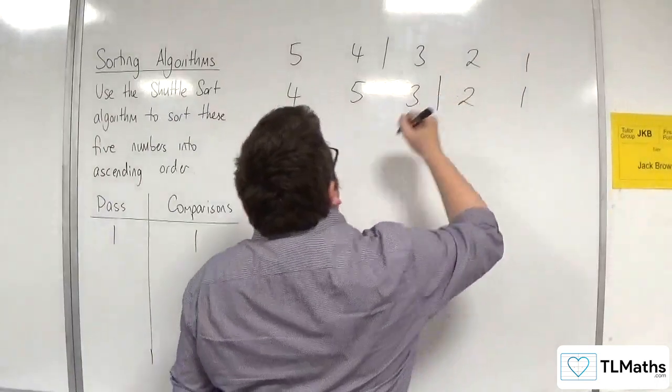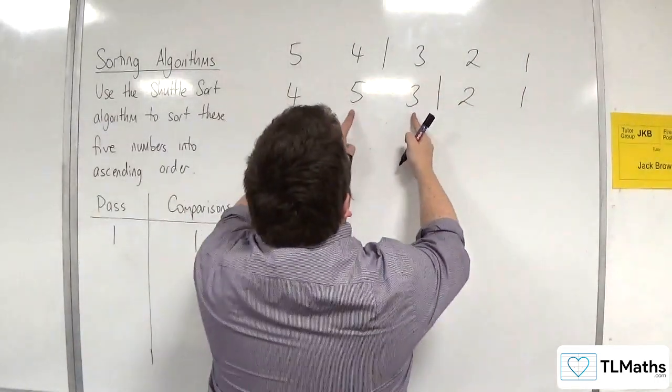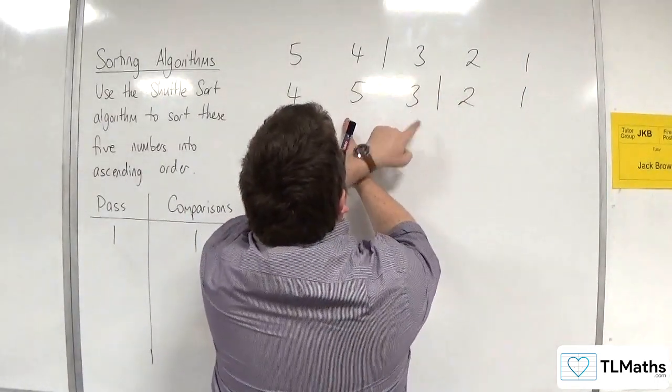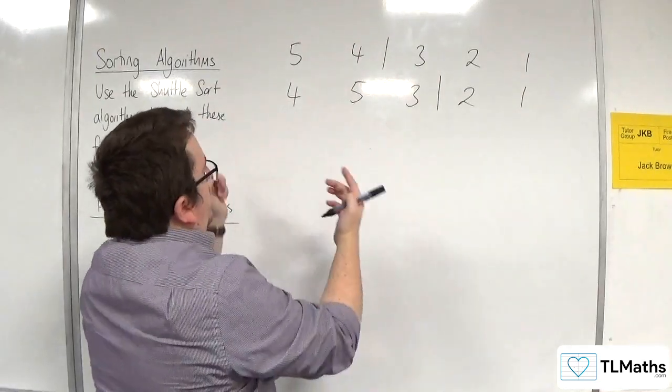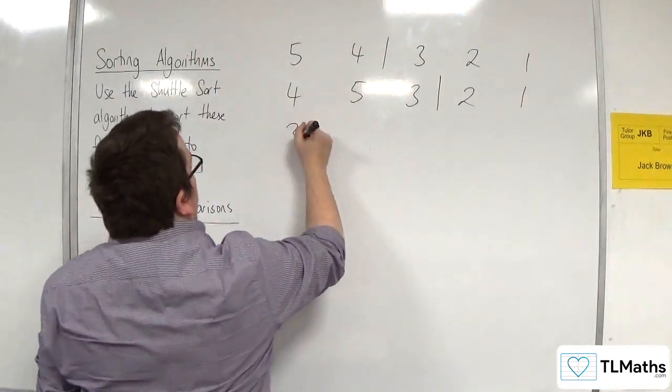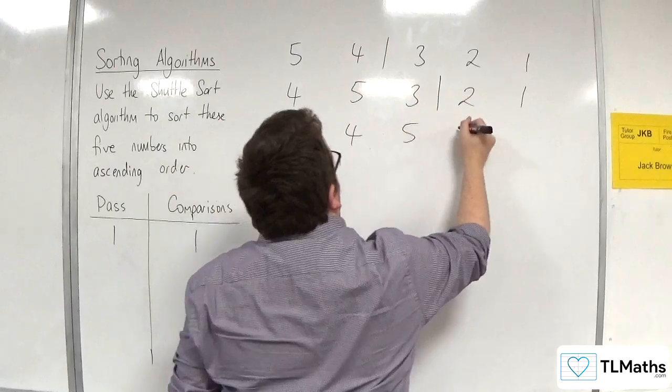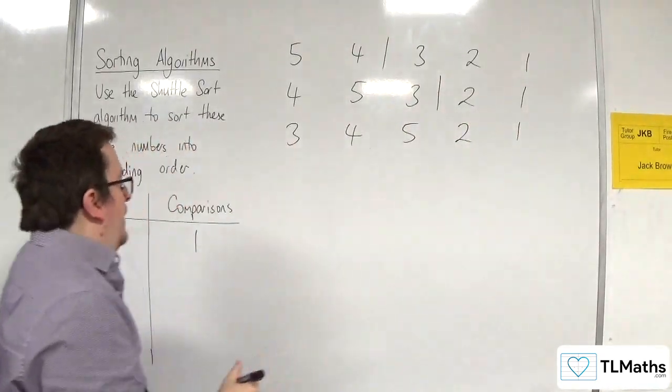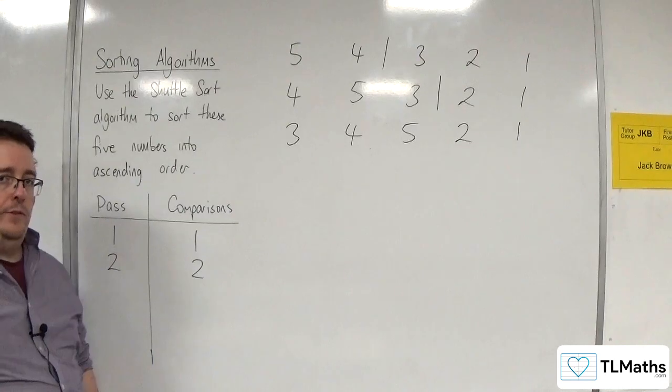Then, we bring in 3. 3 gets compared with 5, and they will swap. Then, 3 will get compared with 4, and they will swap. And we would have 3, 4, 5, 2, 1. So, on that second pass, we made 2 comparisons.